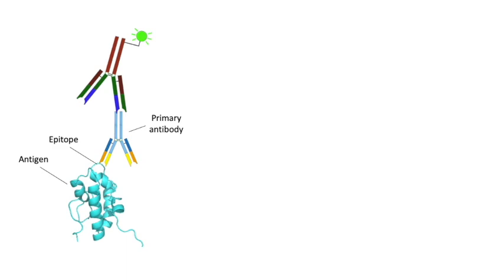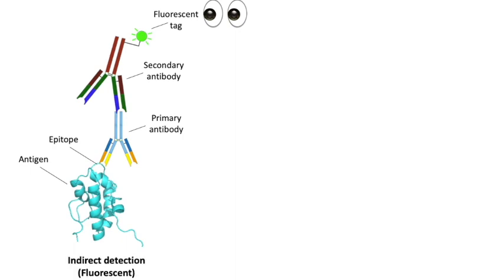A different antibody, the secondary antibody, is designed to recognize and bind to the primary antibody. Furthermore, the secondary antibody is modified in such a way that we can visualize it. In practice this means that it is conjugated to a fluorescent dye molecule or a fluorescent protein, for example. As the fluorescence we observe comes from the secondary antibody, which is only bound to our protein of interest via the primary antibody, we call this indirect detection.